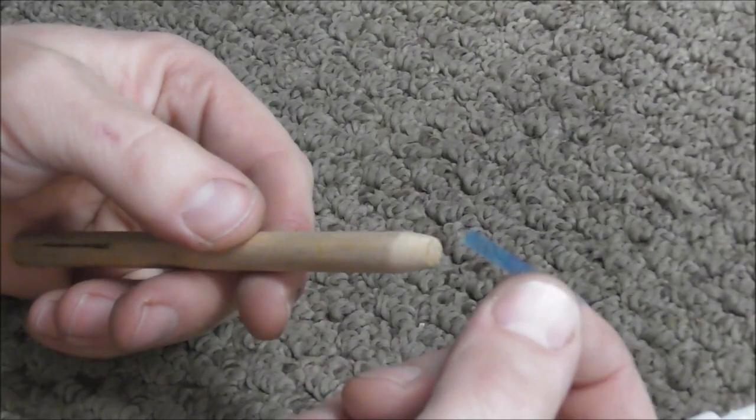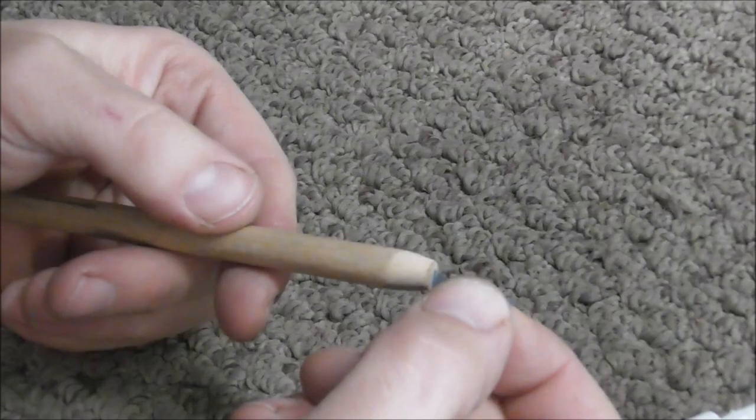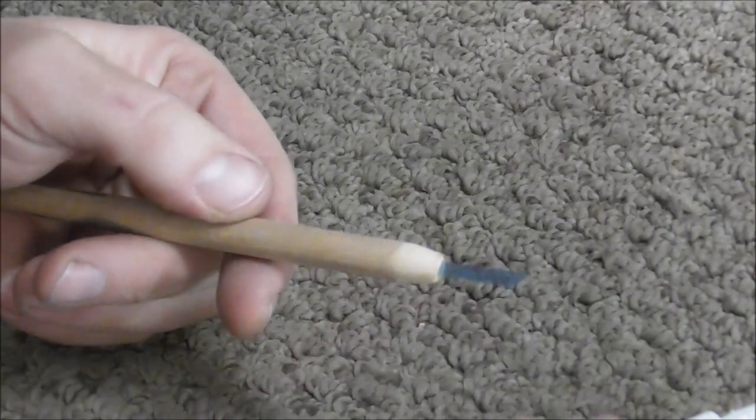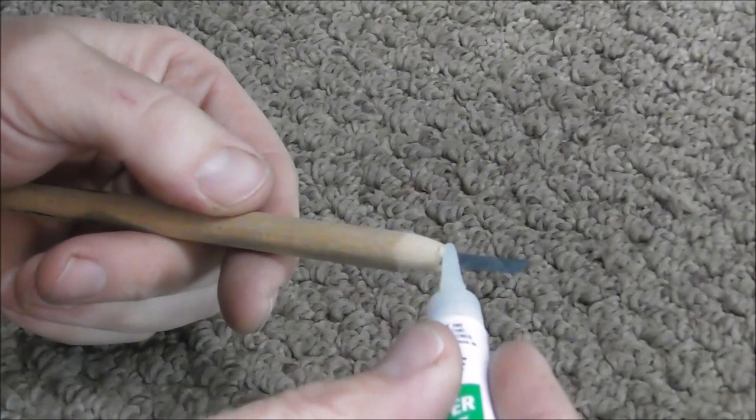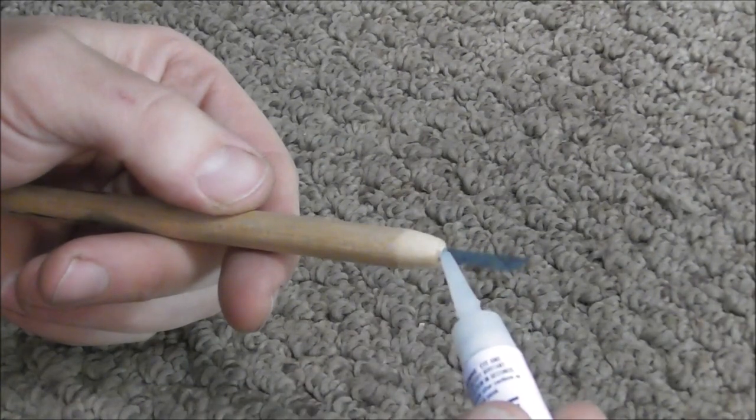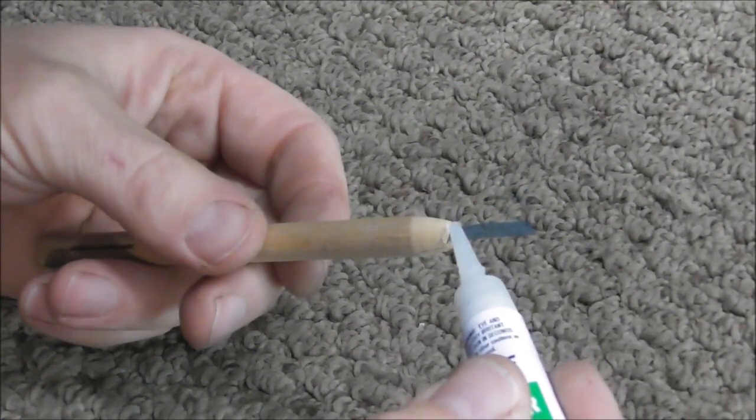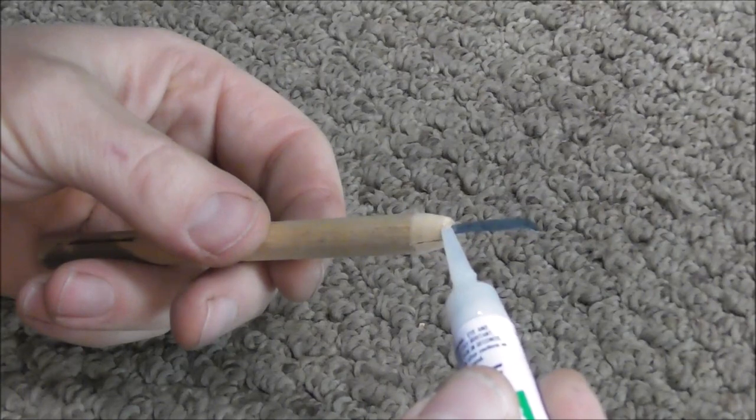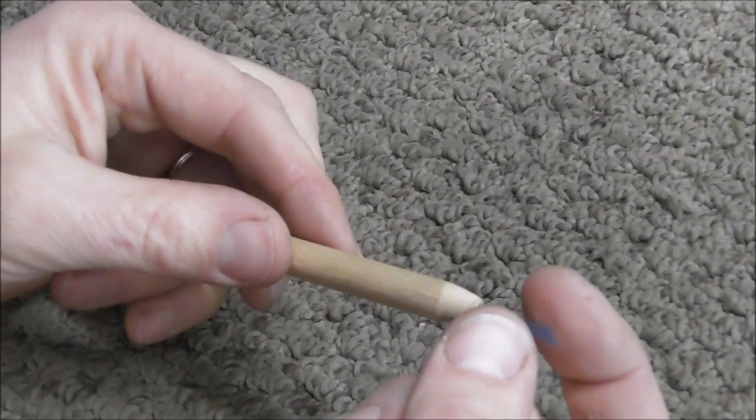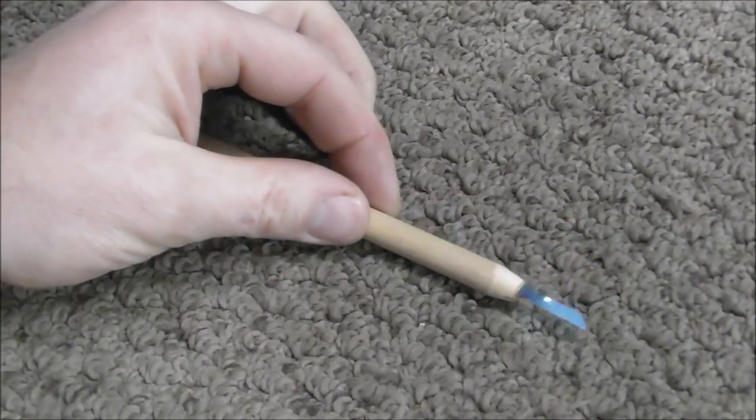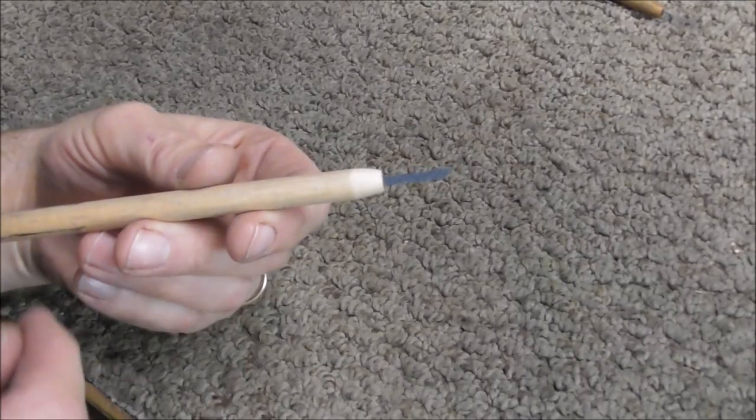Then take the part from the cassette tape and put it into the slot and take some super glue and put a drop or two on there and straighten it out and set it down and let it dry. And now this is ready to use.